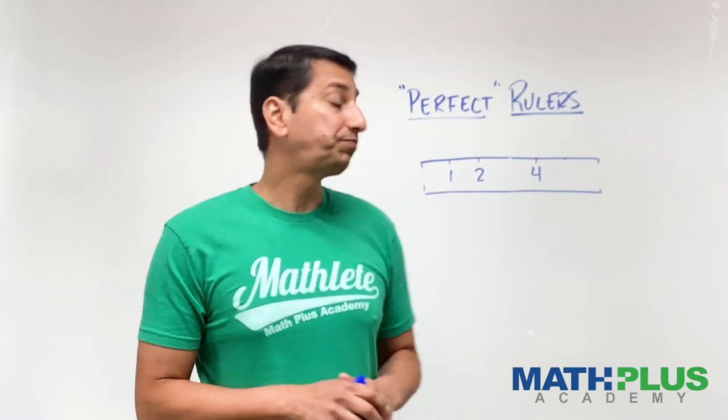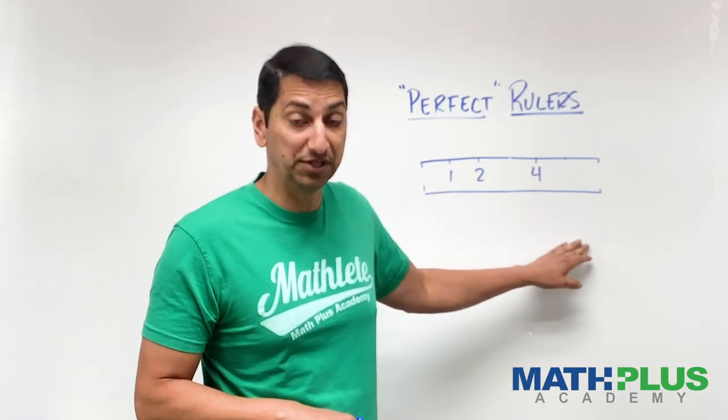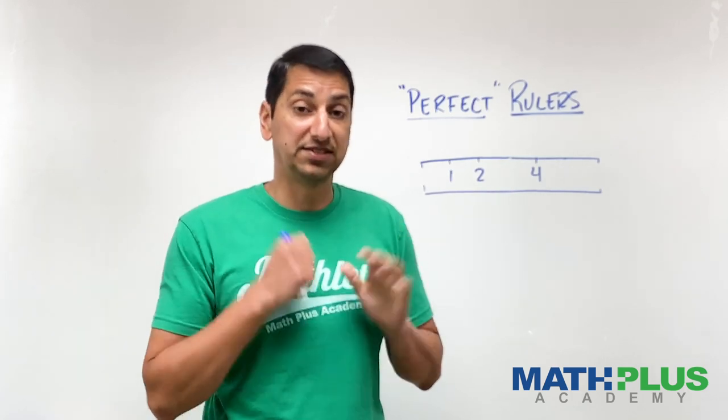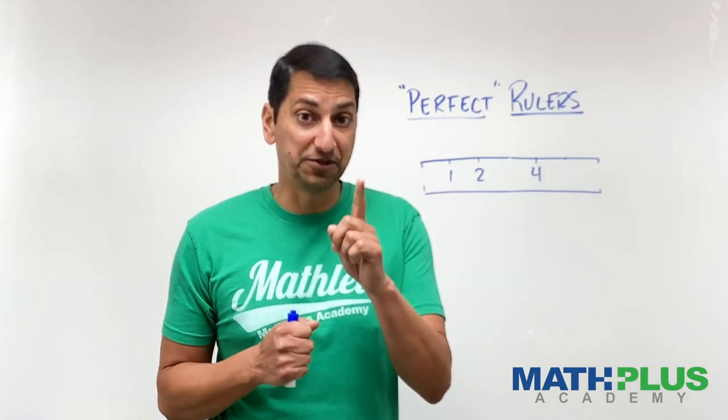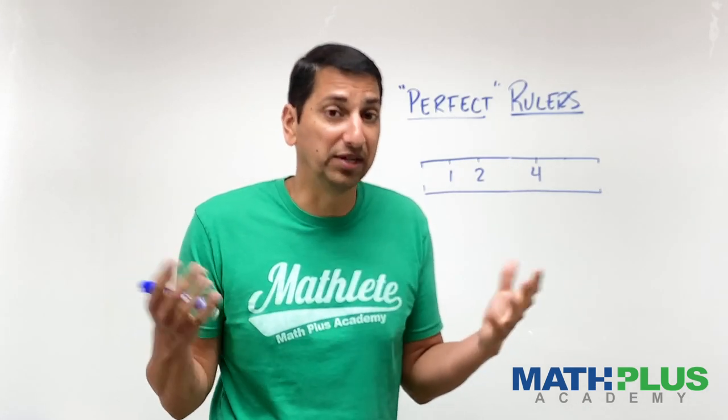So, challenge is, what is the fewest number of marks required on this ruler so you can measure everything? One, two, three, four, five, and six units long. That's your first challenge. Can you do it with two marks? Can you do it with one mark? I don't know.